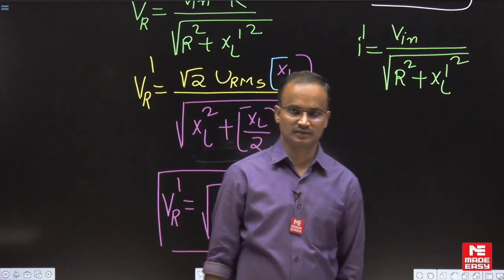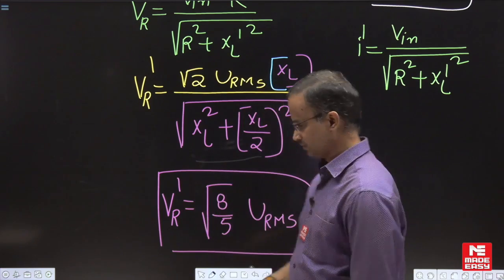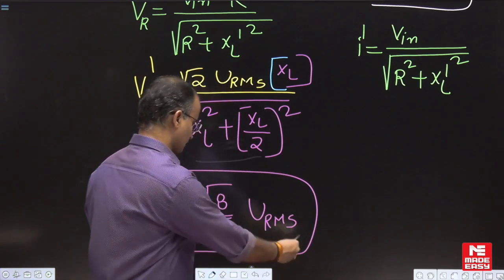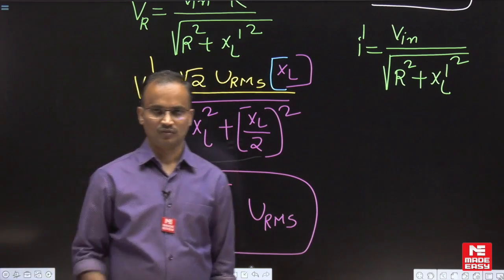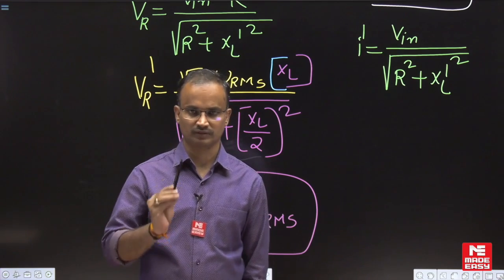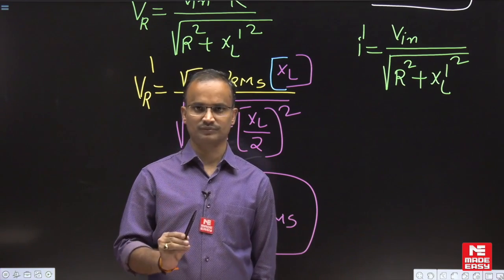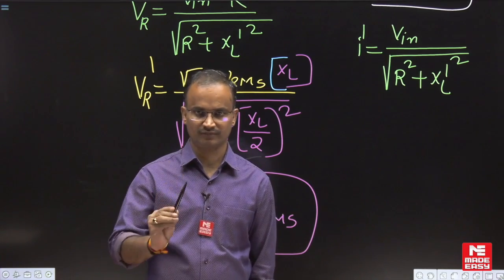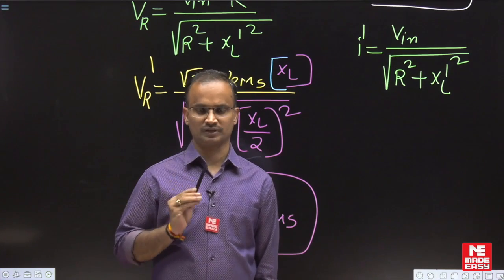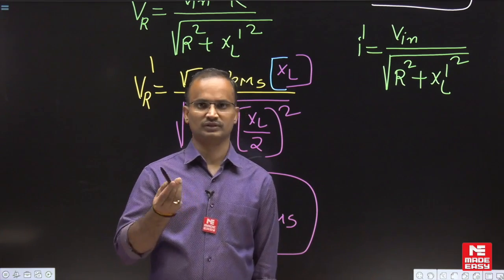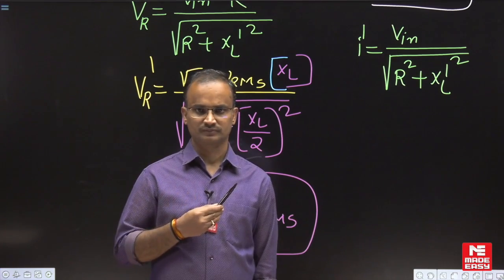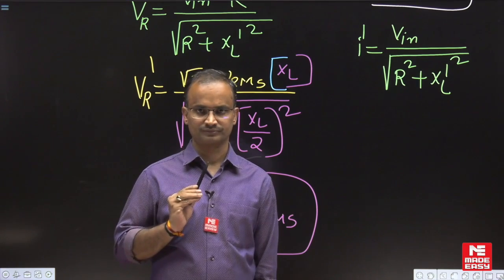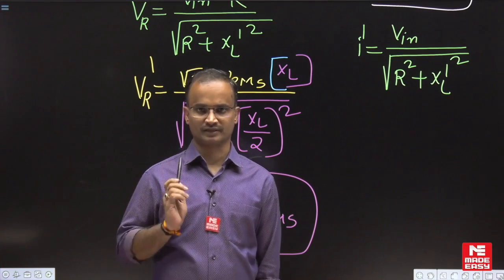In the question, the voltage across the resistance at 50 Hz is asked, and the options are given in terms of URMS. Whenever you are solving steady state AC circuit problems, first be thorough with the phasor diagrams, because at every step both magnitude and angle are included. That is why solving DC circuit problems is a little easier compared to AC circuits — in AC circuits, always be thorough with phasor diagrams.